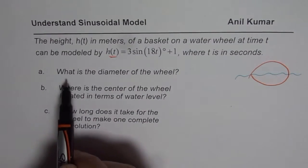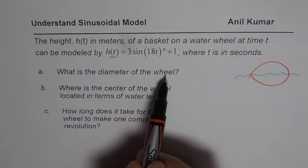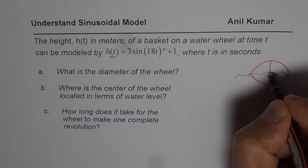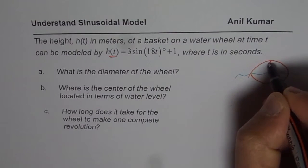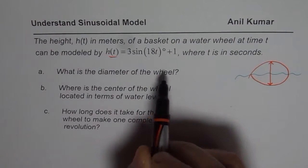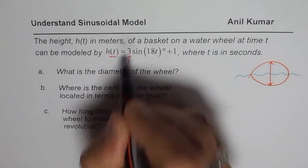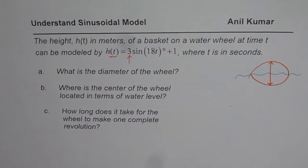Now the question is, what is the diameter of the wheel? So it is a full circle and we need to find diameter of this particular wheel, so that is this diameter. Now as you can see from the equation itself, 3 actually is the amplitude and 3 really gives you the radius of the wheel.